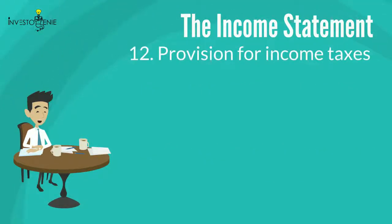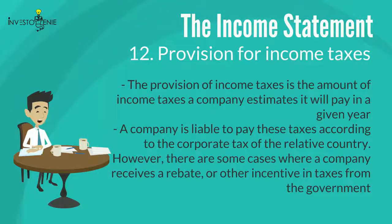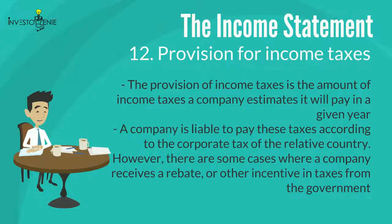Twelve: provision for income taxes. The provision for income taxes is the amount of income taxes a company estimates it will pay in a given year. This is typically reported quarterly with each earnings report. A company is liable to pay these taxes according to the corporate tax rate of the relevant country. However, in some cases a company receives a rebate or other tax incentive from the government, making it liable to pay only the taxes remaining after the rebate.